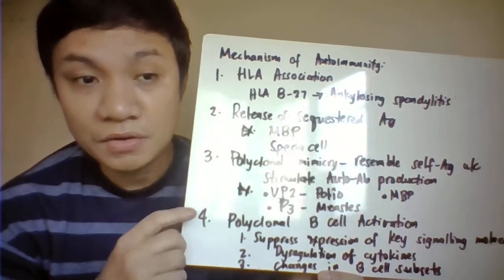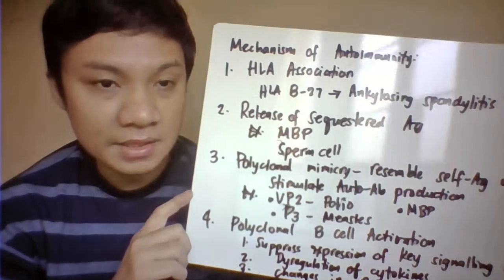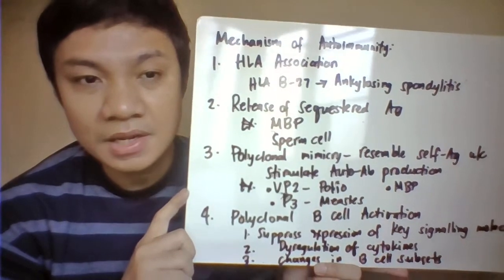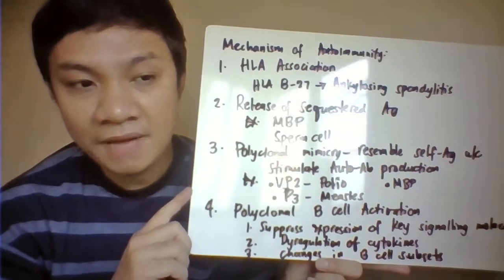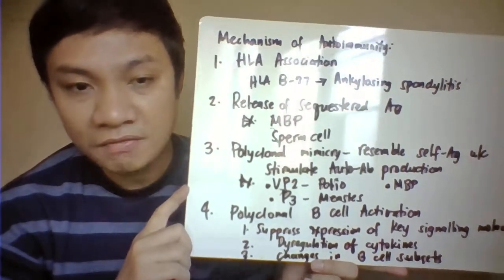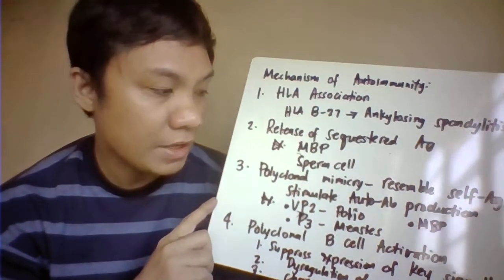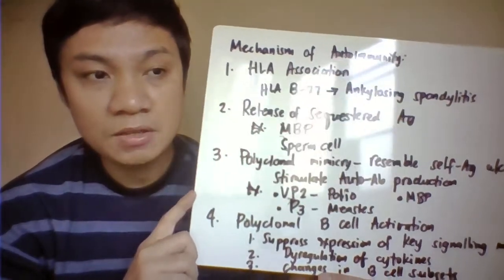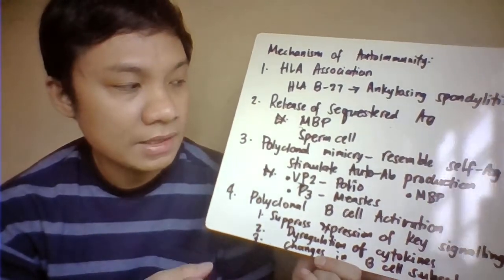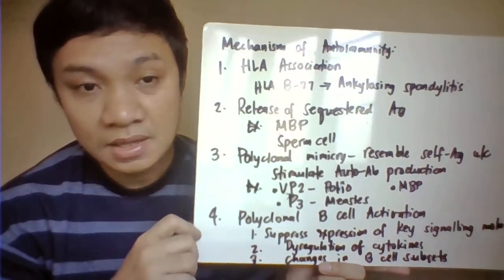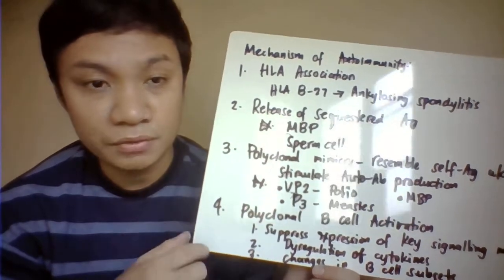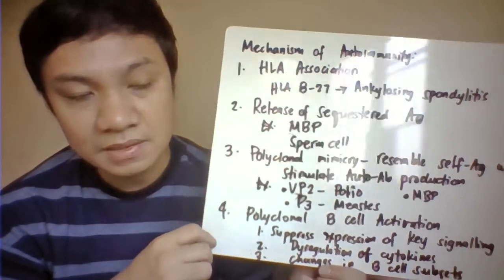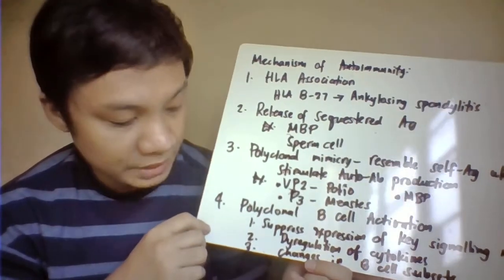Examples of sequestered antigens include myelin basic protein, found protecting the axons of neurons in the CNS, and sperm cells, which are normally confined to the testes and not found in peripheral circulation. Third, molecular mimicry, where a pathogen antigen resembles a self-antigen, resulting in the production of autoantibodies. Examples include VP2 protein of poliovirus, P3 of measles virus, and myelin basic protein.